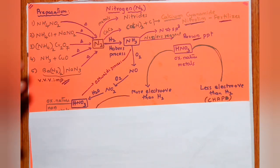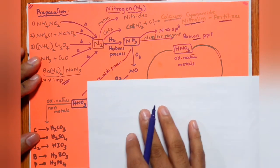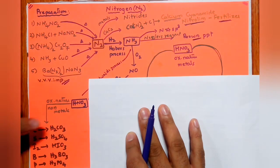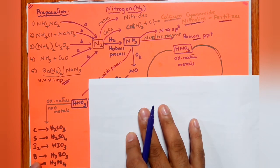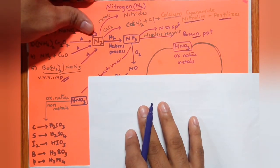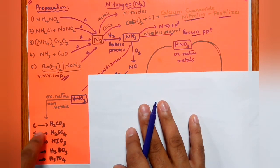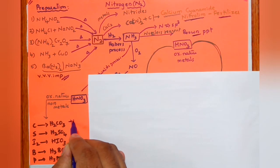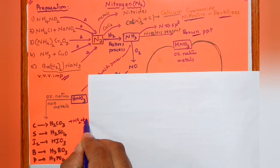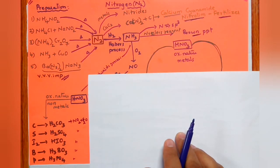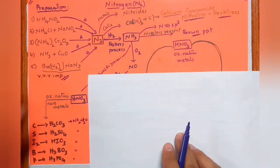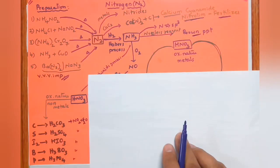NH3 is oxidized in the presence of oxygen to form NO; NO reacts with oxygen to form NO2; NO2 dissolves in water to form HNO3 — this process is called the Ostwald process. HNO3 is a strong oxidizing acid. When HNO3 reacts with non-metals: carbon gives CO2, sulfur gives H2SO4, I2 gives HIO3, boron gives H3BO3, phosphorus gives H3PO4.